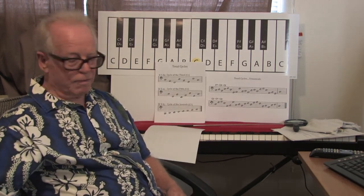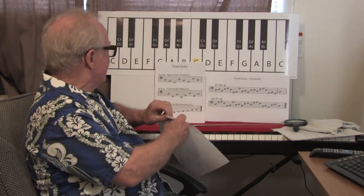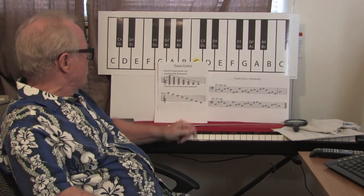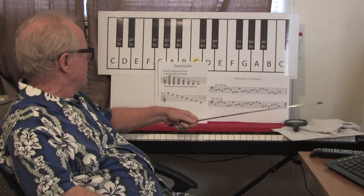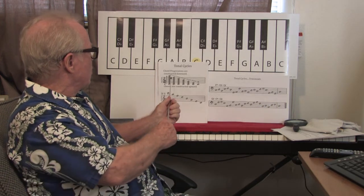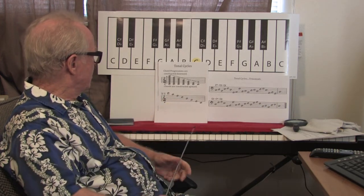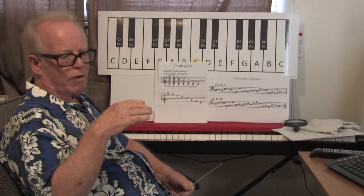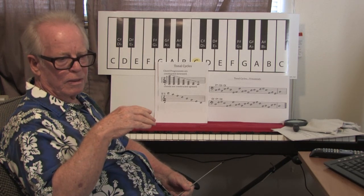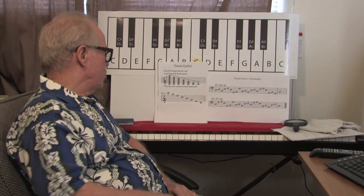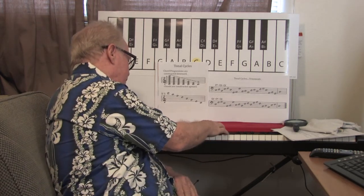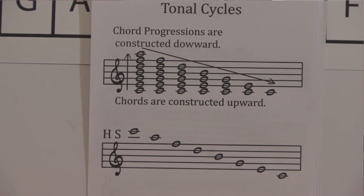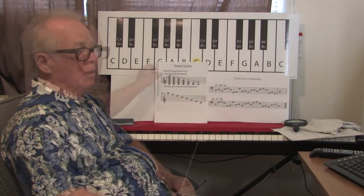The first chord structures are built upwards in thirds, but the tonal cycles are built downwards in thirds. That's an expansion of the first scale — and that's called a harmony scale.